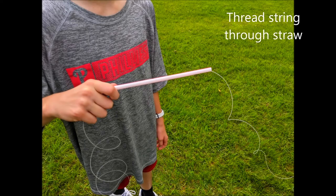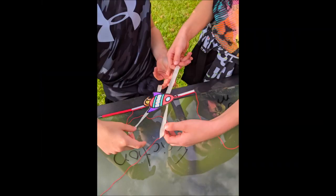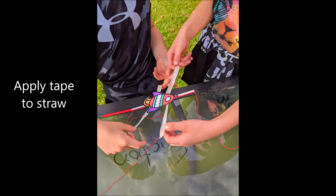Next take your string and thread it through the straw. Stick two pieces of masking tape each about three to four inches long on your straw and let the ends hang over. Don't stick them to anything yet. On top of that, put about a one inch piece of double-sided tape and stick your rocket picture to that.